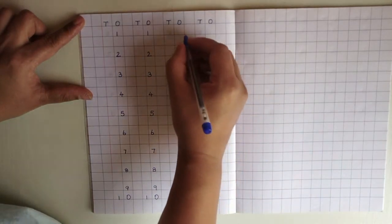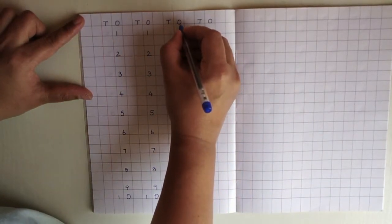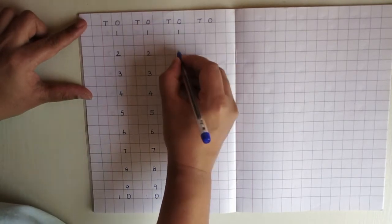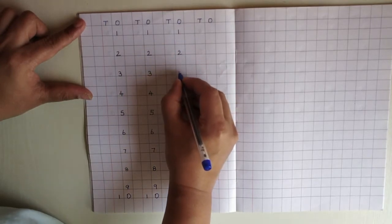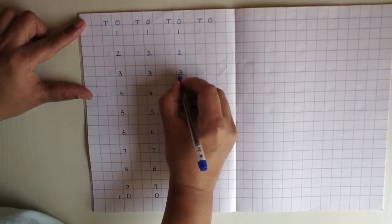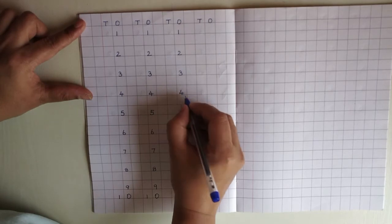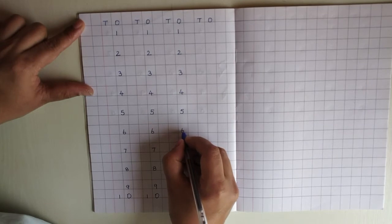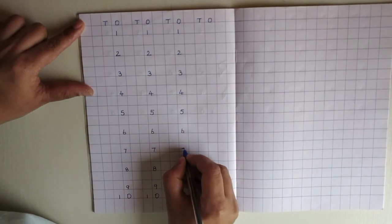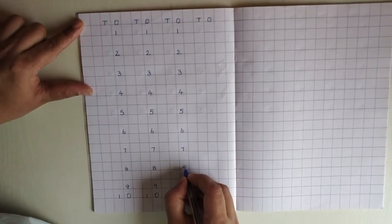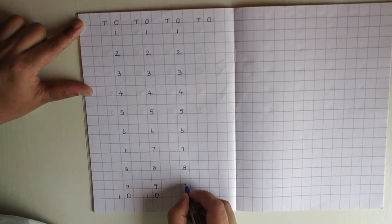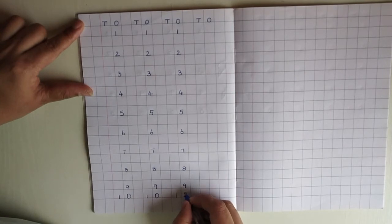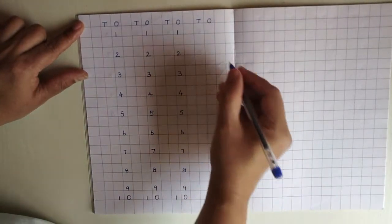Children, when we are writing one, we will always write in one's place. One, two, three, four, five, six, seven, eight, nine, one, zero, ten.